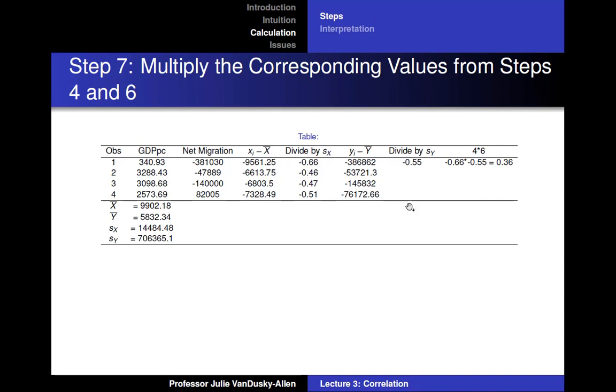Then you multiply the values from steps 4 and 6 together. Negative 0.66 times negative 0.55 equals 0.36. And you do this for the rest of the observations.